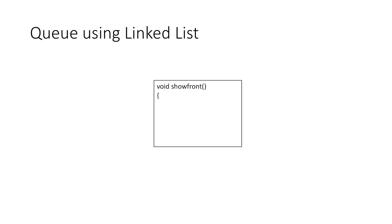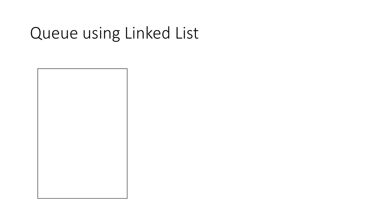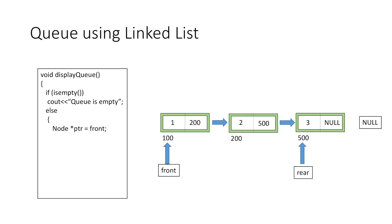In the show front function, we first check if the queue is empty, and if not, we simply display the data in the node pointed by front. For the display queue function, we again check if the queue is empty, and if not we create a pointer ptr, equate it to front, and while ptr is not equal to null, we display the data of the current node and move ptr to the next node by making ptr equal to ptr's link part.